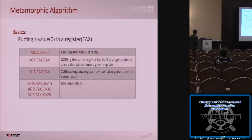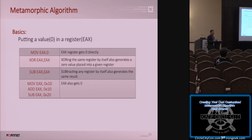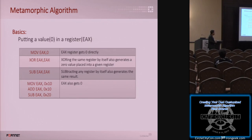Let's go to the main part: the metamorphic algorithm. What is the difference between metamorphic and polymorphic? Polymorphic changes the code and at the same time encrypts it. Metamorphic changes the code, but the code itself is not encrypted — you can actually read it with IDA or a disassembler. The thing is, there are many ways to generate instructions that do the same thing. For example, to put zero into register EAX: you can use MOV EAX, 0; or XOR EAX, EAX; or subtract the same value from the register. Different groups of instructions, but it produces the same result — that is metamorphic.